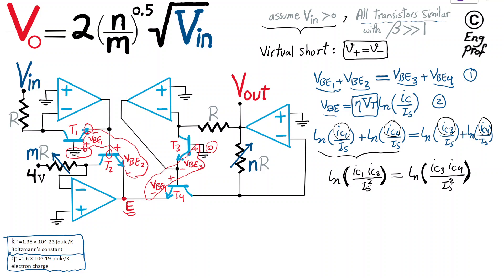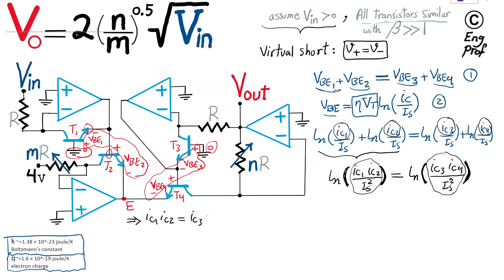Because the natural logarithm is a one-to-one function, I can equate the terms inside. So as a result: IC1 · IC2 = IC3 · IC4. In this equation 3, I just need to substitute expressions for each collector current.